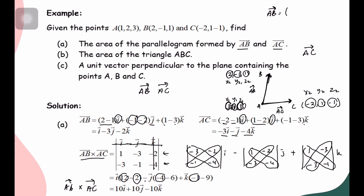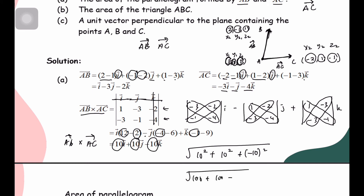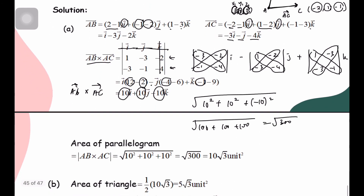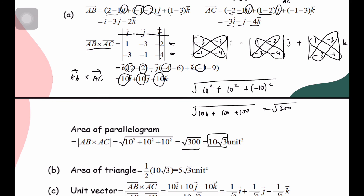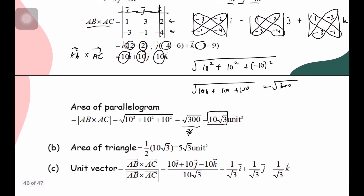The area of the parallelogram is the magnitude of AB×AC = √(10² + 10² + (−10)²) = √(100 + 100 + 100) = √300. Simplifying: √300 = √(100×3) = 10√3. So the area of the parallelogram is 10√3 square units. If asked for the area of the triangle, that is half of this: 5√3 square units.